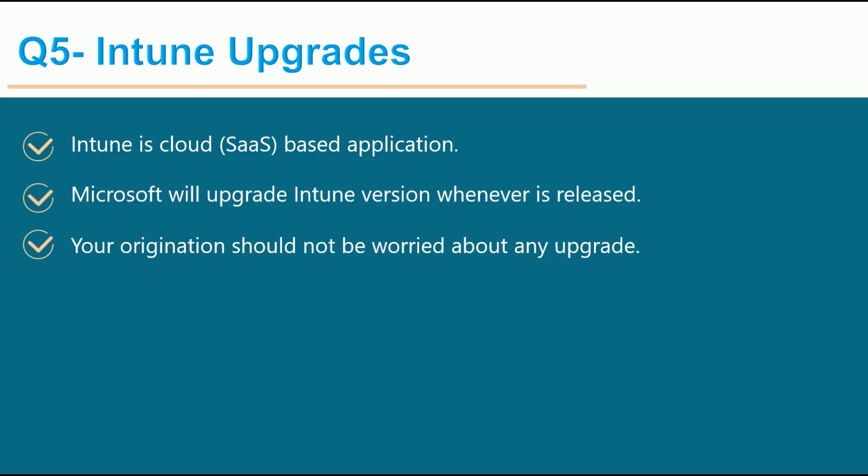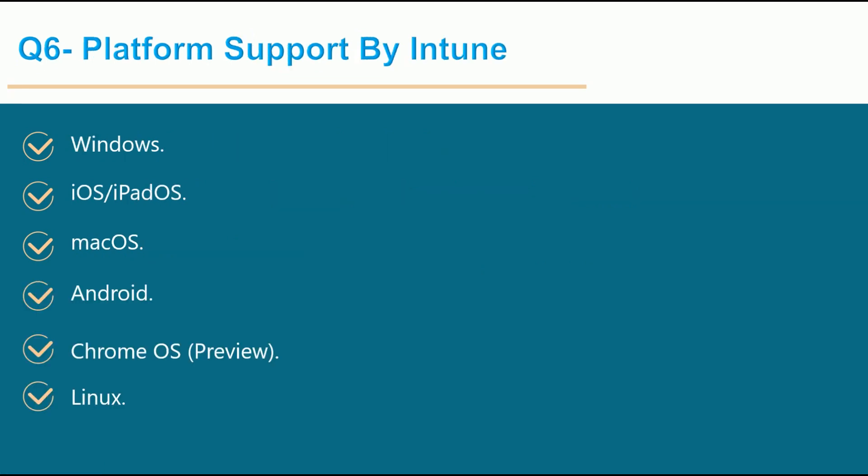Regarding Intune upgrades — many people ask what happens when a new Intune version is released and who upgrades it. Intune is a cloud-based SaaS application, so Microsoft upgrades Intune whenever a new version is released. Microsoft updates it on their backend and your console upgrades automatically, because you don't own the infrastructure. This is different from SCCM, where you own the on-prem infrastructure and must upgrade it yourself. With Intune, your organization doesn't need to worry about upgrades.